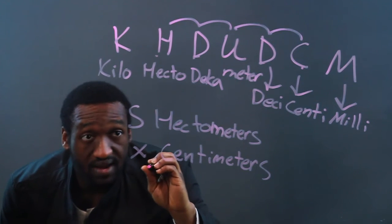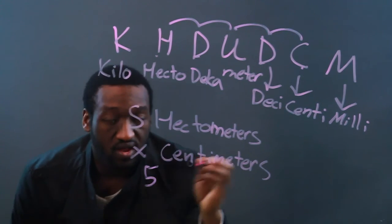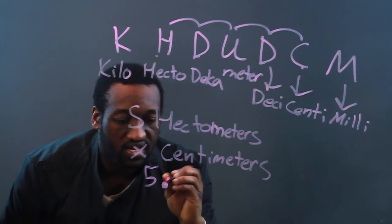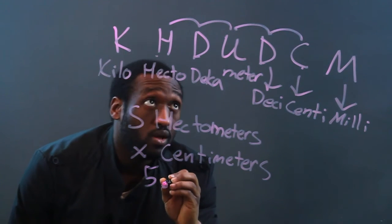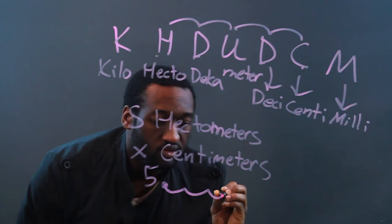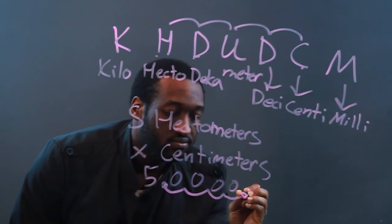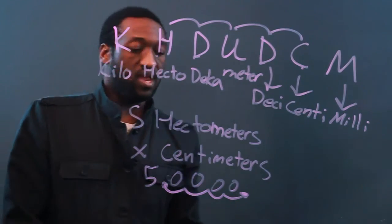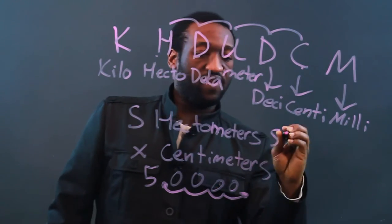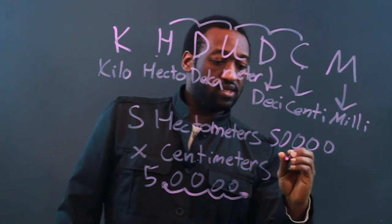So I'm going to do the same thing with this five. Remember that for whole numbers, our decimal place starts on the end. So I will go one, two, three, four places, fill in my empty spots with zeros, and I'll say that five hectometers is 50,000 centimeters.